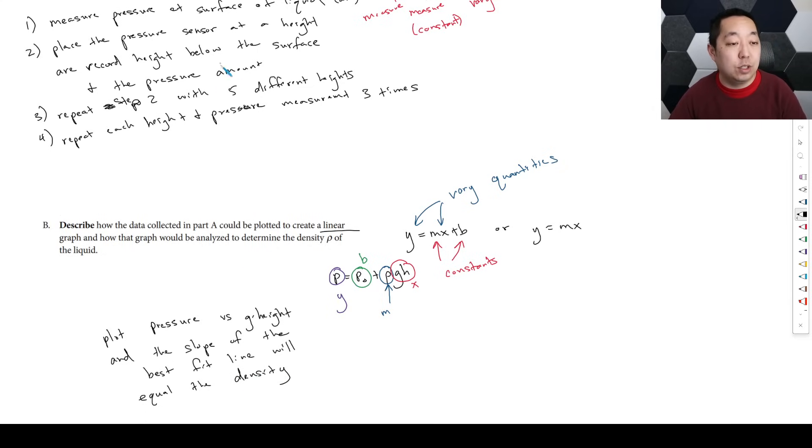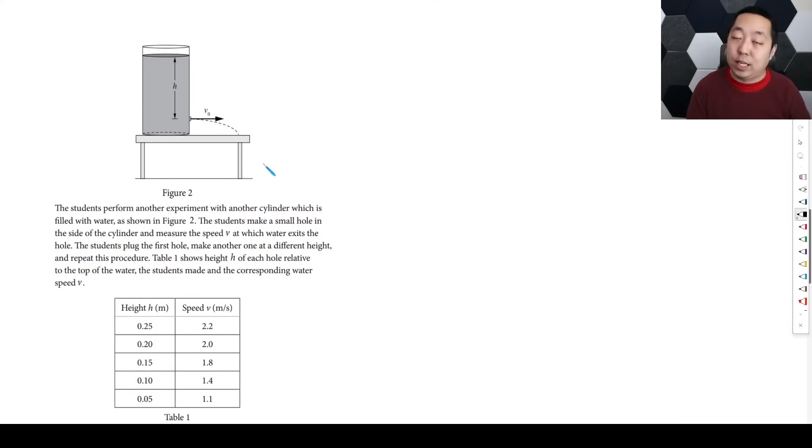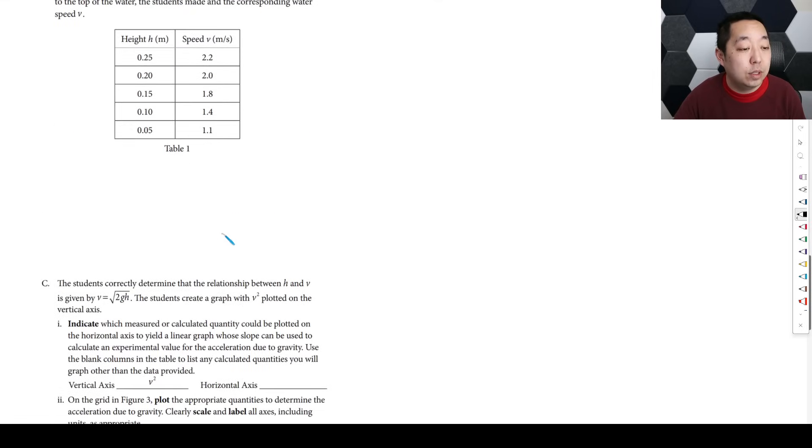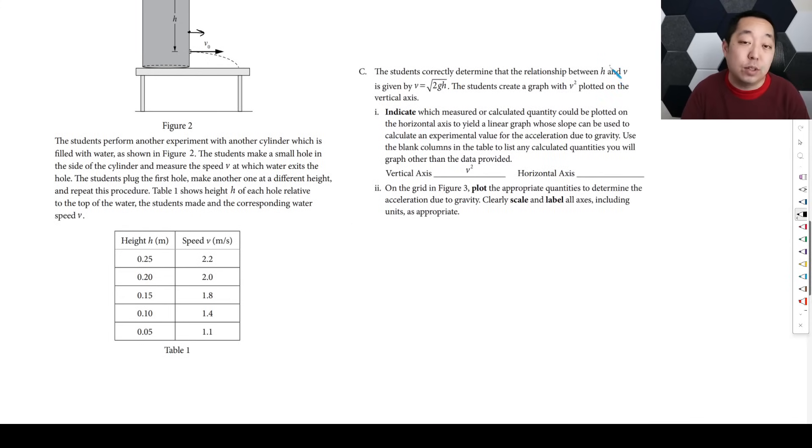So that's the two parts for the experimental design portion, right? So now we're going to actually do some analysis. So this is just making sure you can design an experiment and things like that. So now we're going to go into this. They give you an experiment. They give you a setup. This is different from the other parts, right? So this is separate and contained. And they're just giving you an experimental setup. So the students make a small hole in the side of the cylinder and measure the speed v at which the water exits the hole. The students plug the first hole and make another one at a different height and repeat this procedure. So we're varying this height here and we're measuring the velocity, the speed at which it comes out. Okay, so now this is not hydrostatic pressure anymore. This is dynamics because the fluid is moving, right? So this is Bernoulli's, it's the principle you're thinking about. Students correctly determine... So this is, we haven't gotten to the question. They're just sort of giving you the setup.